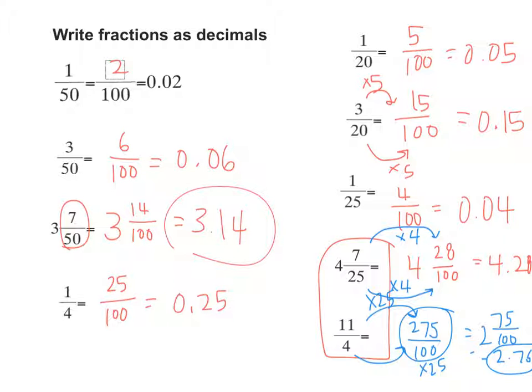So by doing this, we can see that we can write equivalent fractions so that the denominator is a multiple of 10. And as long as the denominator is a multiple of 10, we can write it into a decimal. Yes? Very good.